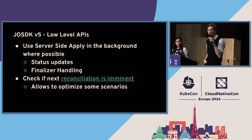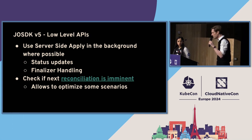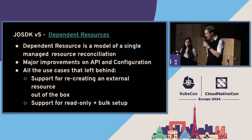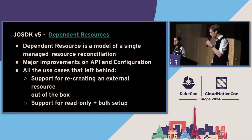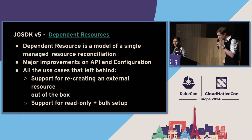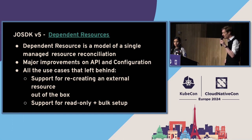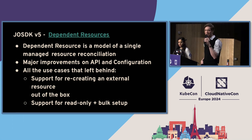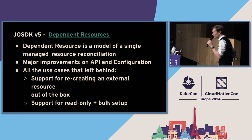They've also introduced finer-grained control on how they handle reconciliation loops — you can check if the next reconciliation is imminent and have some finer-grained control over how you return from your reconciliation loops in the Java controller. They've also improved their handling of dependent resources — how, if you have a CRD, you can have dependent resources attached so Kubernetes knows they belong to you. They've made improvements for notable use cases like recreating external resources and support for read-only and bulk setup.